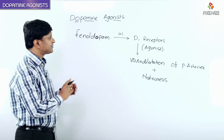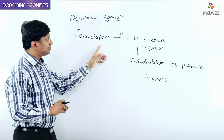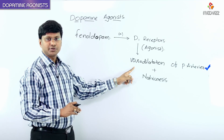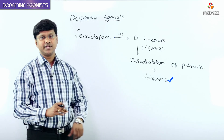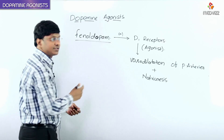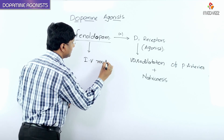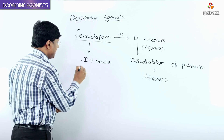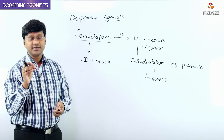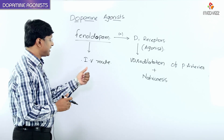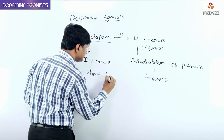To summarize the mechanism of action: fenoldopam is a dopamine D1 receptor agonist. By stimulating D1 receptors, it causes vasodilation of the peripheral arteries, and it also causes natriuresis. This fenoldopam is used by the intravenous route, causing peripheral arterial dilation as well as natriuresis, giving effective blood pressure control.